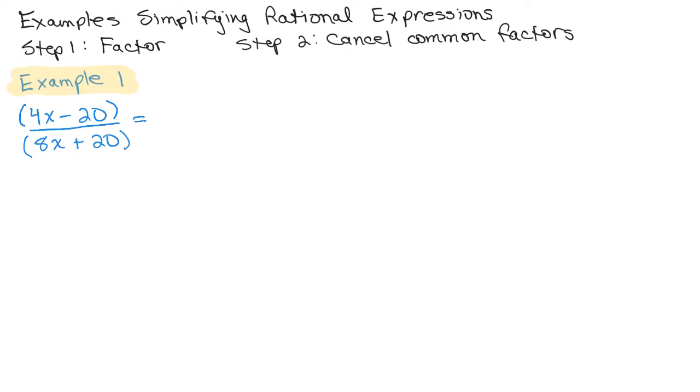And the first thing you do in factoring is look for a common factor, which is 4 in the numerator. So I've got 4 times X minus 5.